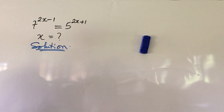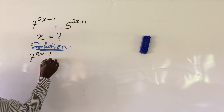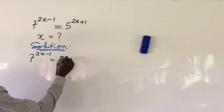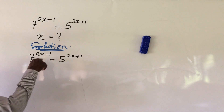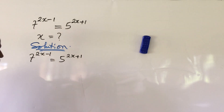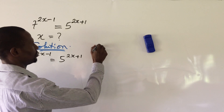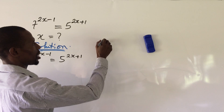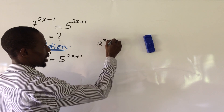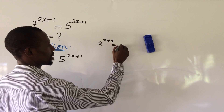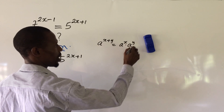We bring down the question, which is 7 to the power of 2x minus 1 equal to 5 to the power of 2x plus 1. Now we can rewrite this expression according to the law of exponents. If you have a to the power of x plus y, this is the same thing as a to the power of x times a to the power of y.